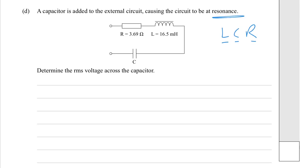Determine the RMS voltage across the capacitor. So, when it's at resonance, VRMS for, well, let's just do it. VC is going to be equal to VL. Because at resonance, those are equal and opposite.